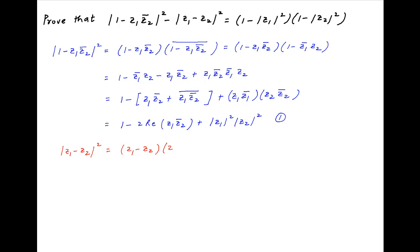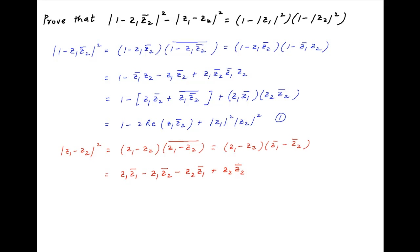The second term on the left hand side is the absolute value of z1 minus z2, squared, which is equal to the product of z1 minus z2 and its conjugate. This is equal to z1 minus z2 times the conjugate of z1 minus the conjugate of z2. Expanding, this equals z1 times the conjugate of z1, minus z1 times the conjugate of z2, minus z2 times the conjugate of z1, plus z2 times the conjugate of z2. This gives the absolute value of z1 squared, minus z1 times the conjugate of z2 plus the conjugate of z1 times z2, plus the absolute value of z2 squared.